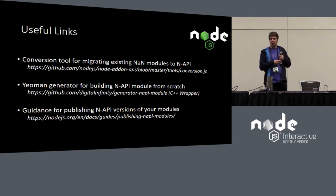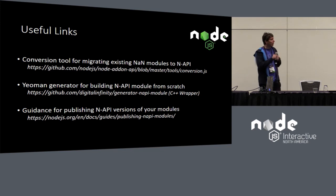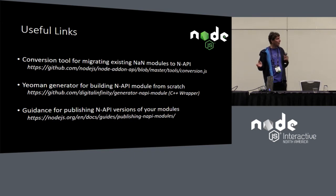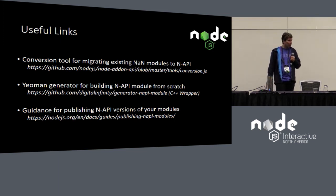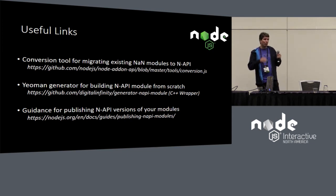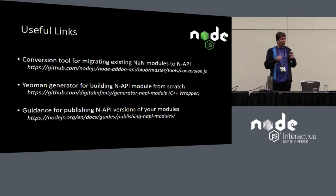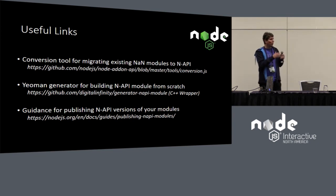If you're starting from scratch, one of the NAPI team members created a Yeoman generator. You can use that generator to create all the scaffolding you need to build a new NAPI module — run it, you get a template, fill in your own code, and get started really easily. We've also written up guidance on how to publish two versions of your module during the transition: the current version with normal modules and an NAPI version so people can use it in the interim.